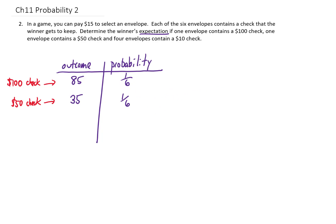Our last possibility is that we get the $10 check. Well, we paid $15 to get that $10 check, so ultimately we lost $5. There are four envelopes that contain that $10 check, so our probability of selecting that $10 check envelope is four out of six.